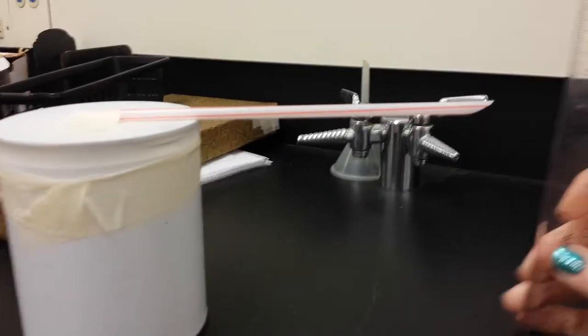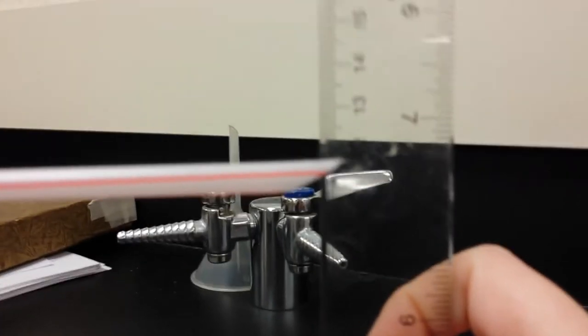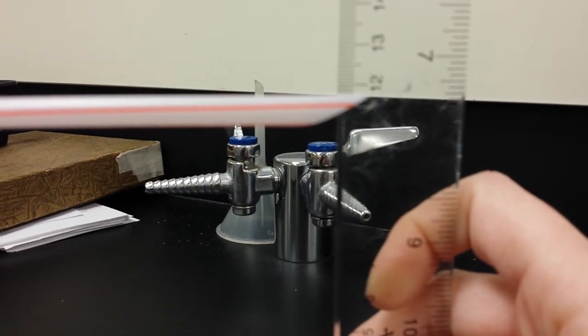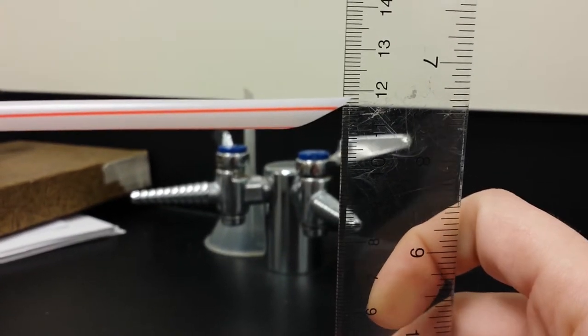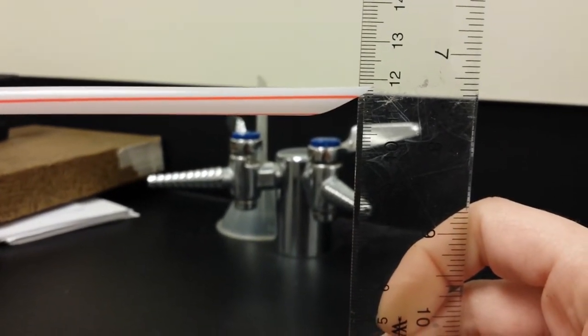The way we're going to measure it is to take a ruler and line it up right by the tip of the straw. So I have my ruler just totally flat against the counter. We're going to do this outside, but then you can kind of line it up.